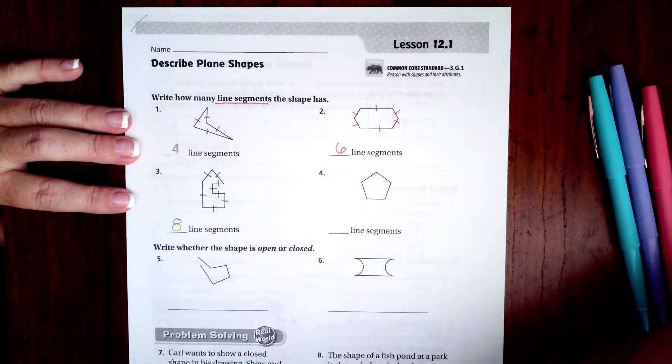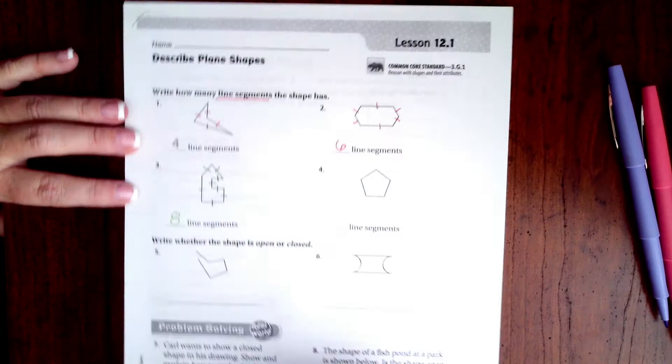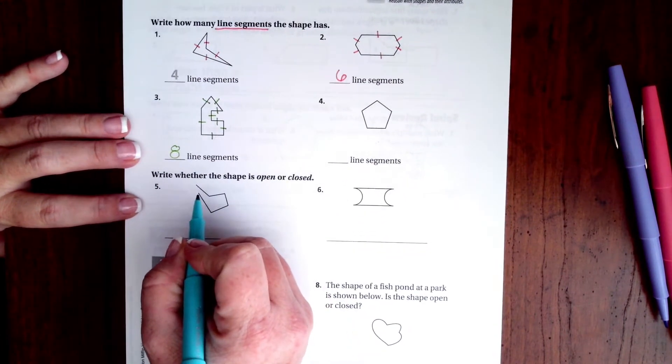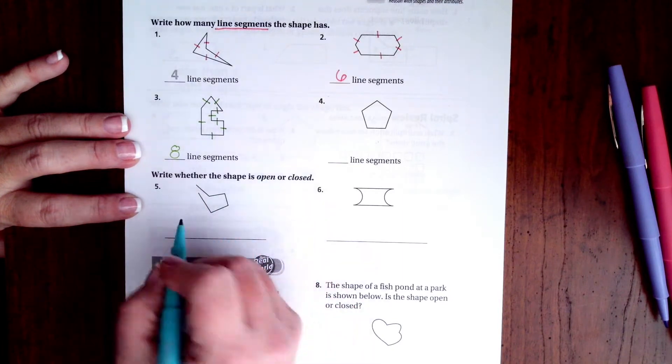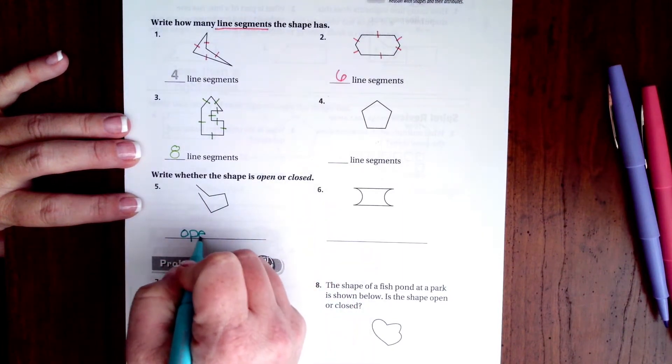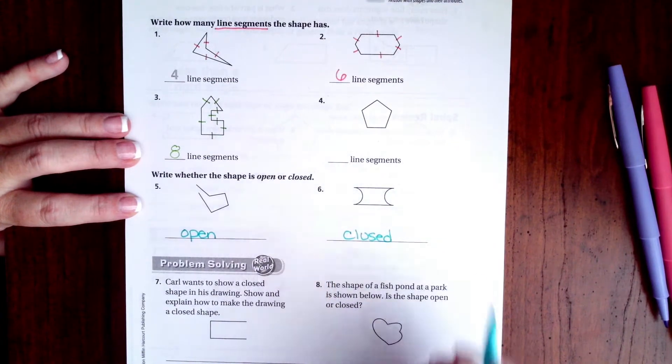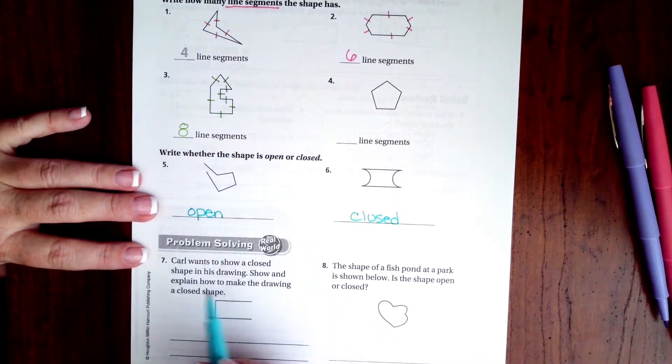Eight sides. You guys go ahead and do number four. Now, open or closed is pretty obvious. This one has an opening, it is open. Guess what the other one is? Closed.